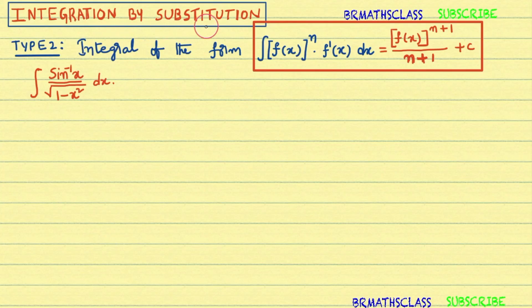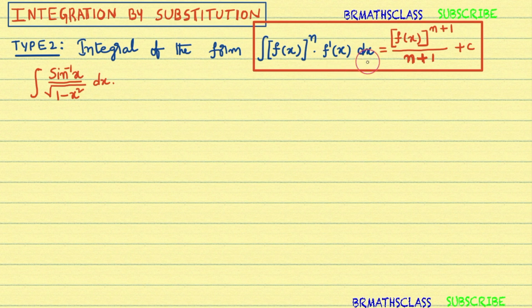Integration by Substitution Type 2: if the given integral is of the form integral of f of x whole power n into f dash of x dx, then its answer we write directly as f of x whole power n plus 1 divided by n plus 1 plus c.